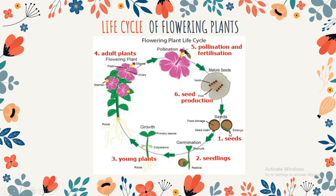Flowering plants reproduce new plants in a process called the life cycle, because each stage is repeated each time a new plant is made. There are six main stages in the life cycle of the flowering plants, and I will explain them one by one.